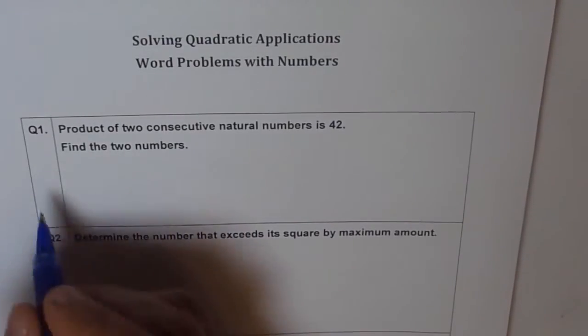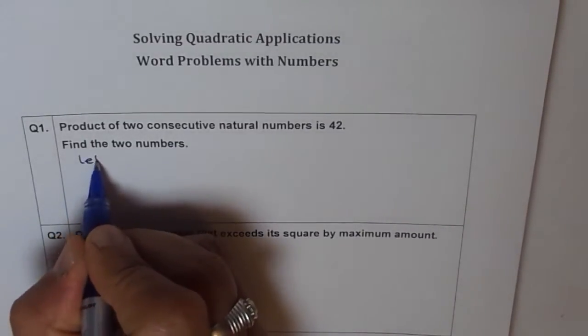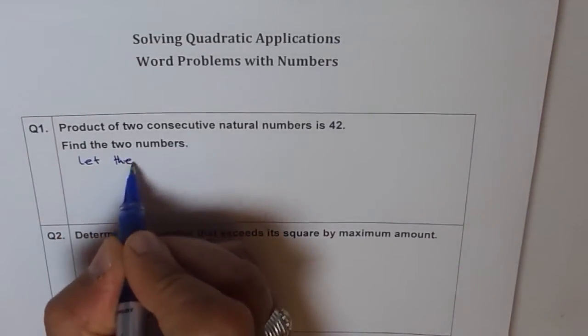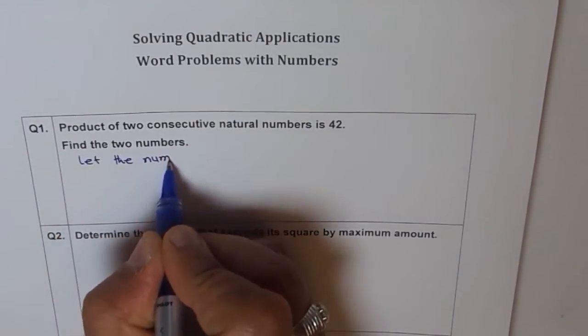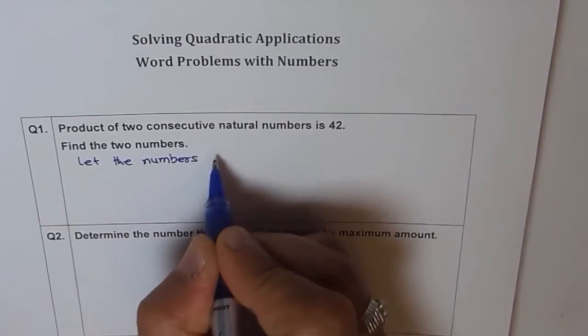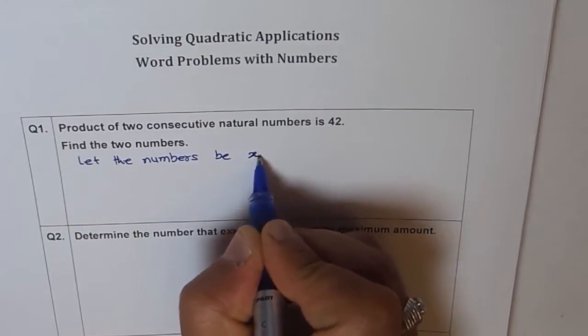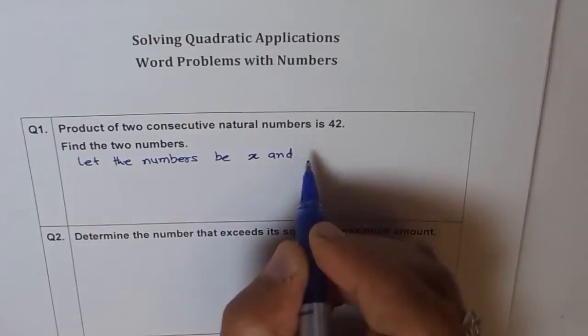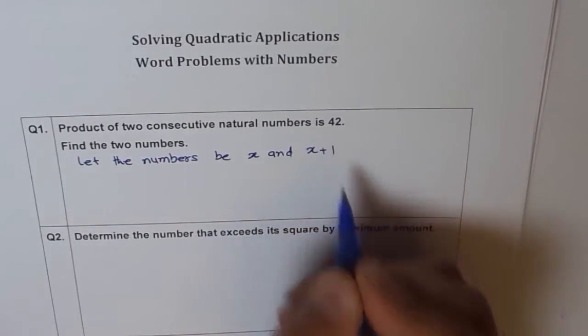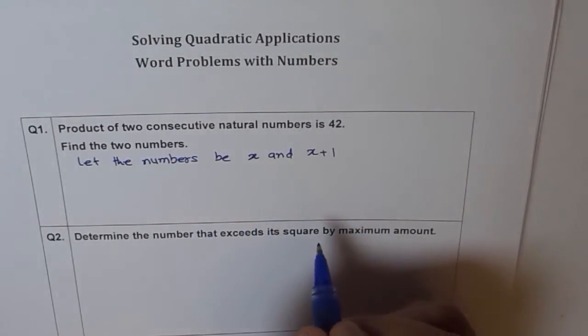So let's say, let the numbers be x and x plus 1, correct? So these are consecutive numbers, okay?